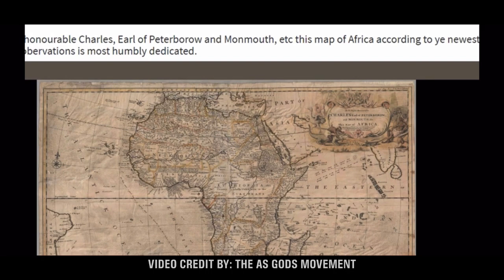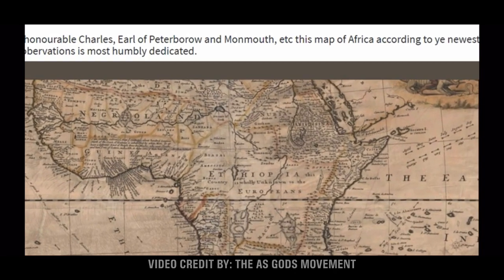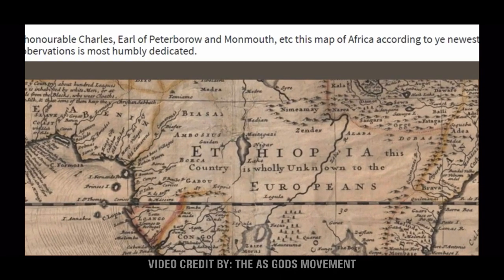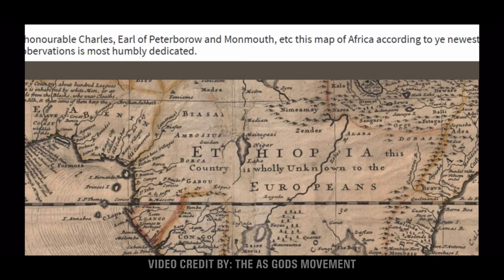This map is made out to the Honorable Charles Earl of Peterborough and Monmouth: 'A map of Africa according to the newest and most exact observations, most humbly dedicated.' What do they call the continent of Africa? Ethiopia. 'This country is wholly unknown to the Europeans.'